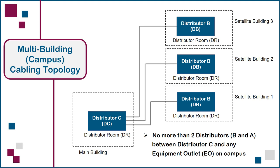And once you specify the maximum allowable cabling lengths, network equipment vendors know with certainty how far their signals need to travel anywhere their products are installed. If you're on the other side as the buyer of network equipment, you know that as long as your cabling infrastructure is standards compliant, you can buy any vendor's equipment, and it will work at your location. That's the benefit of standardization.